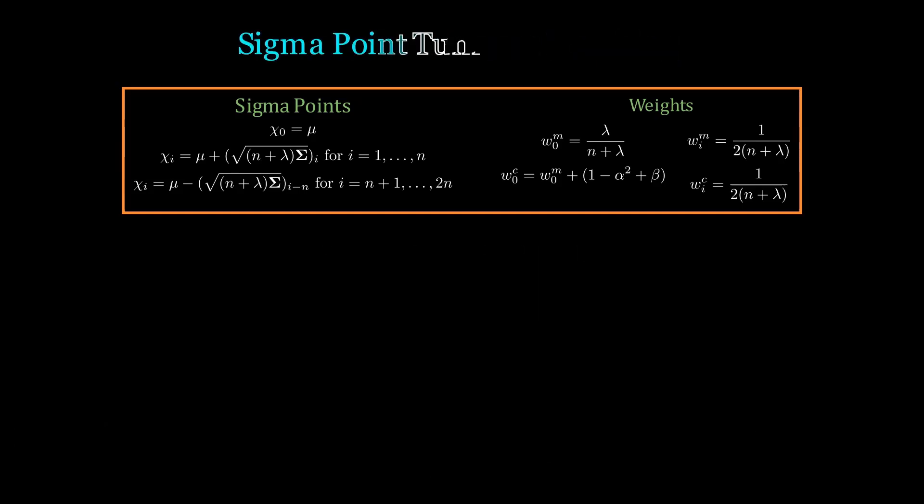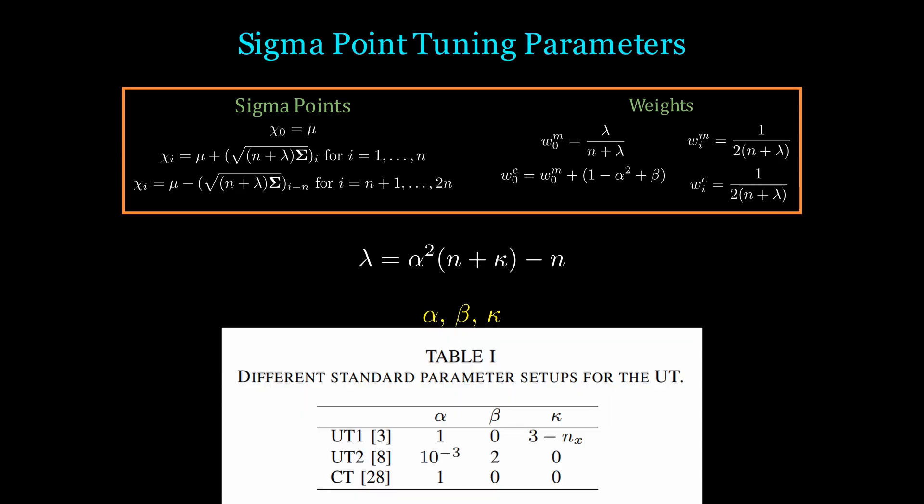We match the first and second moments regardless of the tuning parameters alpha, beta, or kappa. These parameters control the spread of our sampled points and how close they are to the mean. This image shows very popular default values for these parameters. Row 2 in the table is extremely popular and you'll hear about beta equal to 2 being optimal in the literature. This is because this allows our sample points to match up to the fourth moments of our Gaussian distribution, not just the first two.